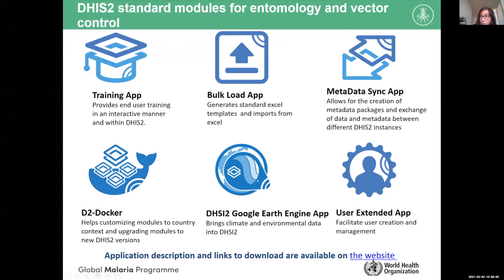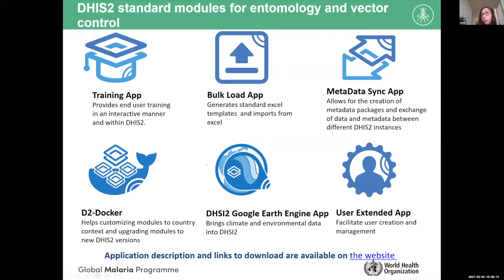There is also an application to integrate climate data. If you want to have climate data — not only for understanding oscillations in your vector population but also for comparing with malaria cases — you can bring in rainfall, temperature, humidity, land use, NDVI, and other types of data. The other tools are more complex, but they are available.